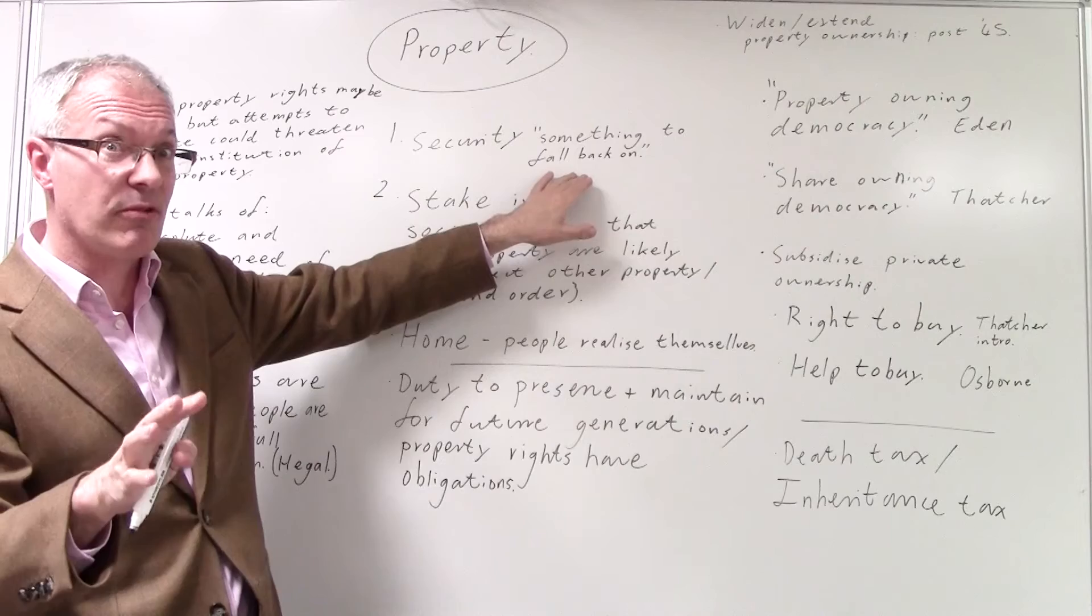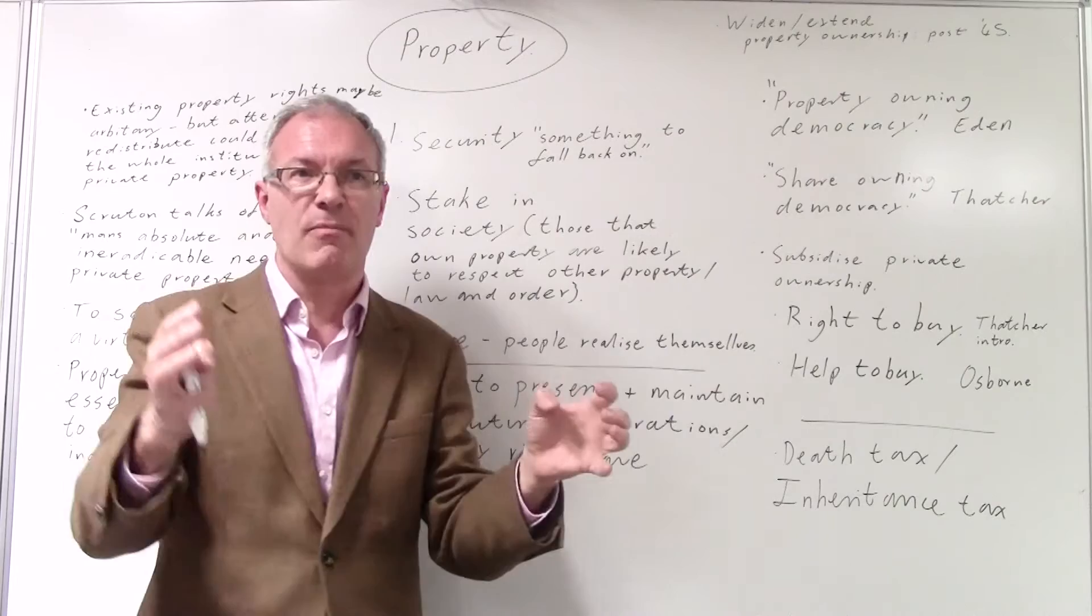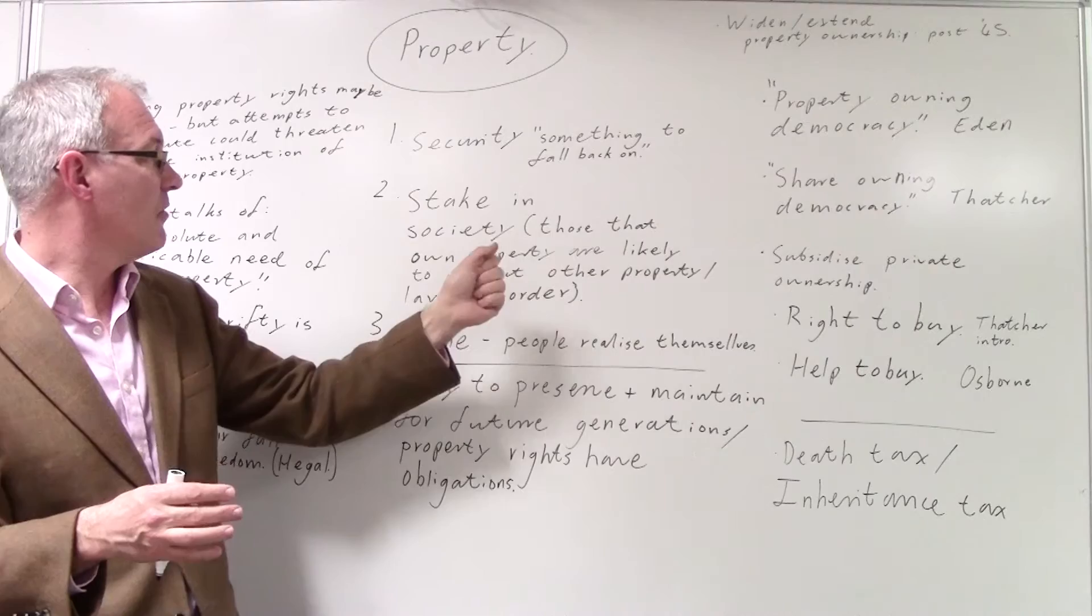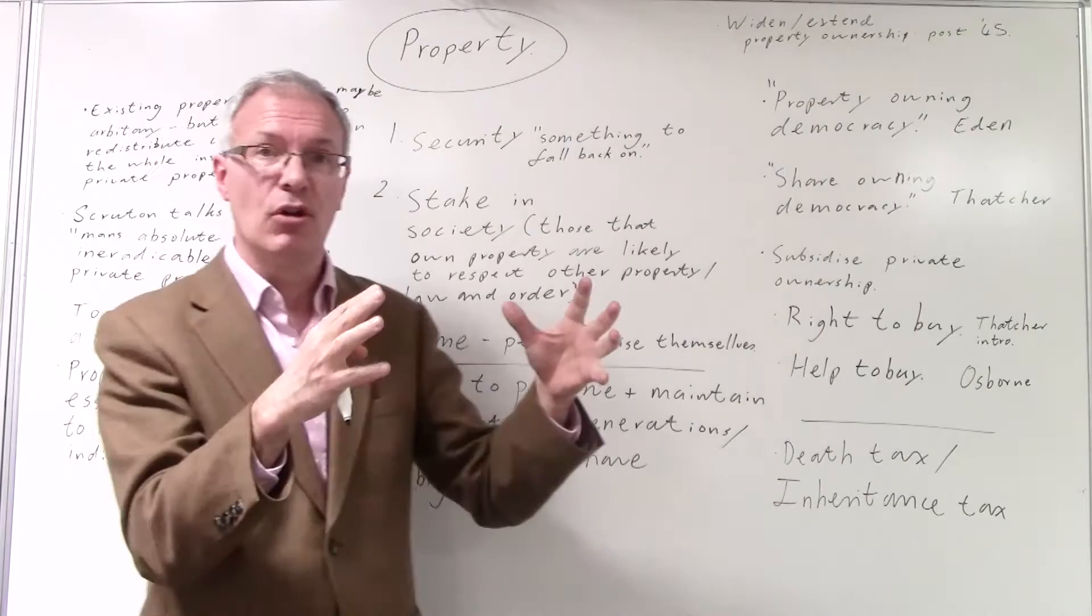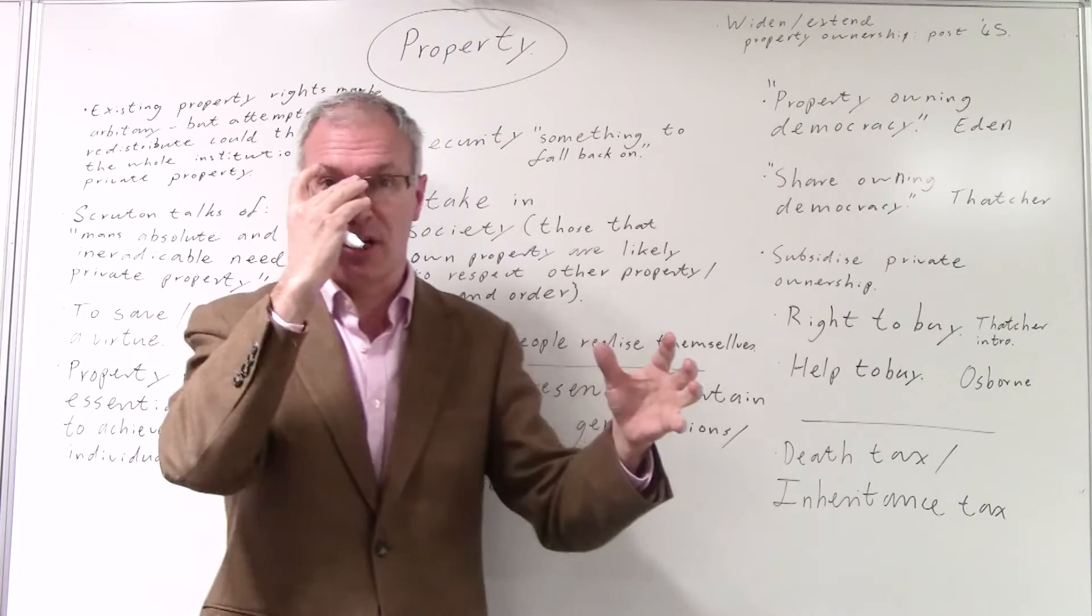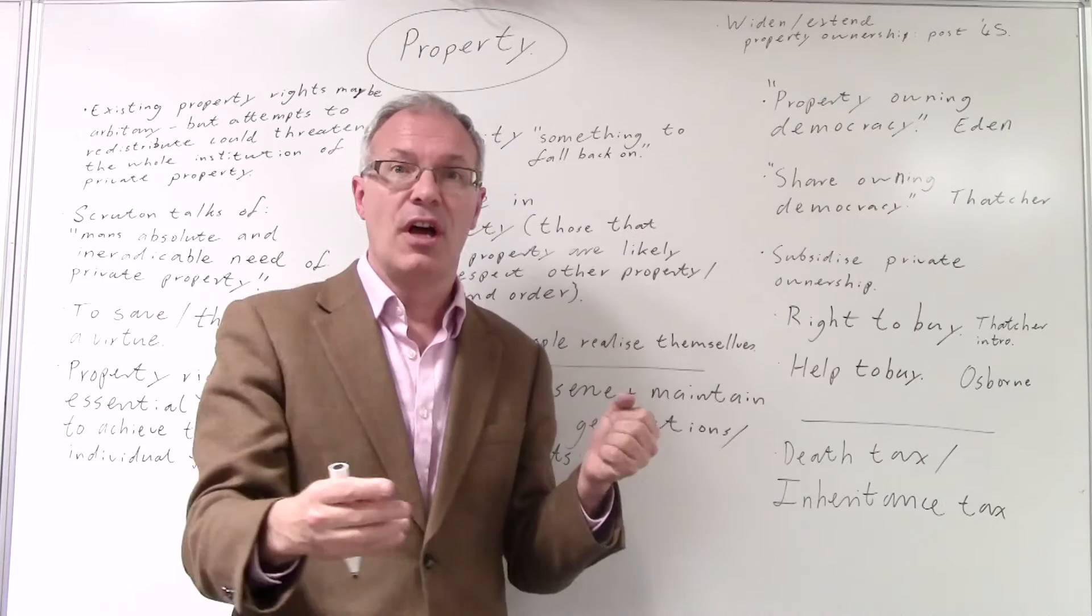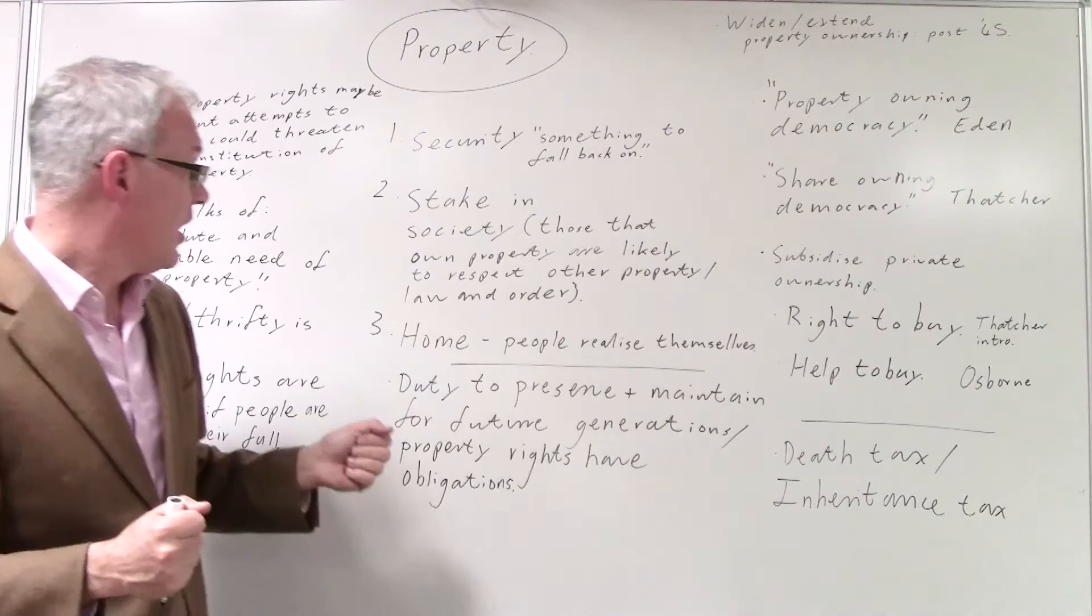Number two, it gives an individual, a family, a stake in society. It provides, those that own property are likely to respect other people's properties, are likely to be law abiding. So it's part of the fabric of society to maintain law and order and stability because you have a stake in society. Something you can see if you look at the 1832 act in terms of who can vote in elections.